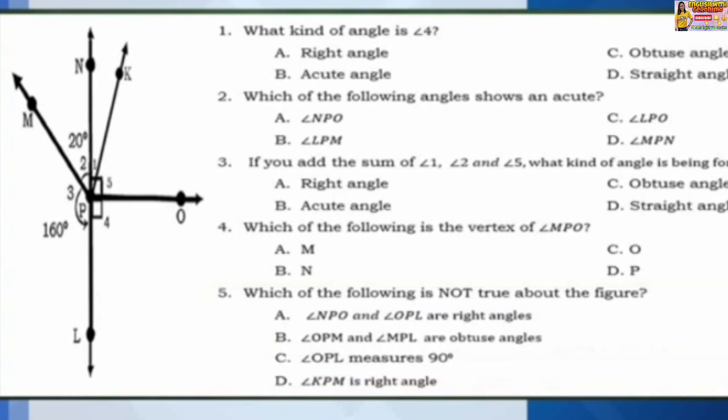Number 5: Which of the following is not true about the figure? A: angle NPO and angle OPL are right angles. B: angle OPM and angle MPL are obtuse angles. C: angle OPL measures 90 degrees. D: angle KPM is a right angle.